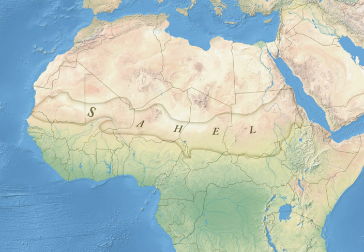The entire Sahel region generally receives between 100 mm and 600 mm of rain yearly. A system of subdivisions based on annual rainfall includes: the Saharan Sahelian climate with mean annual precipitation between 100 and 200 mm, such as Khartoum, Sudan; the strict Sahelian climate with mean annual precipitation between 200 and 600 mm, such as Kiffa, Mauritania; and the Sahelian Sudanese climate with mean annual precipitation between 200 and 400 mm, such as Niamey, Niger. The relative humidity is low to very low, often between 10% and 25% during the dry season and between 25% and 75% during the rainy season.